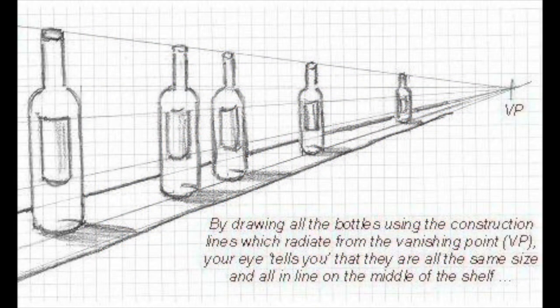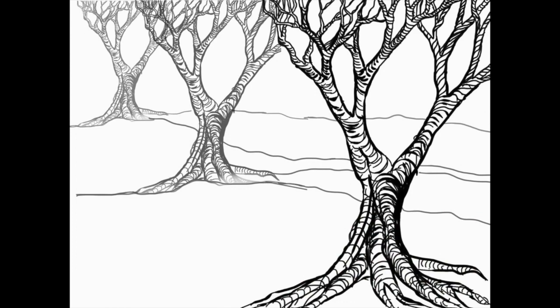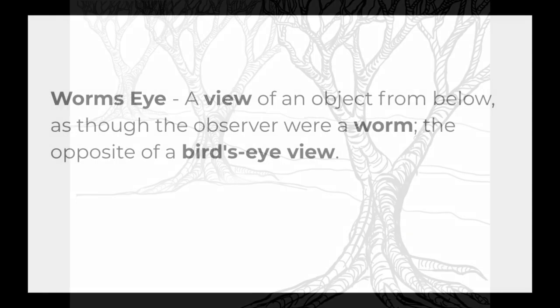We can also see these bottles how they're moving back to that single point and they're getting smaller. Remember, it's an illusion. They're moving up on the plane. The trees are a great example of how the color is getting lighter as things move further away from you.